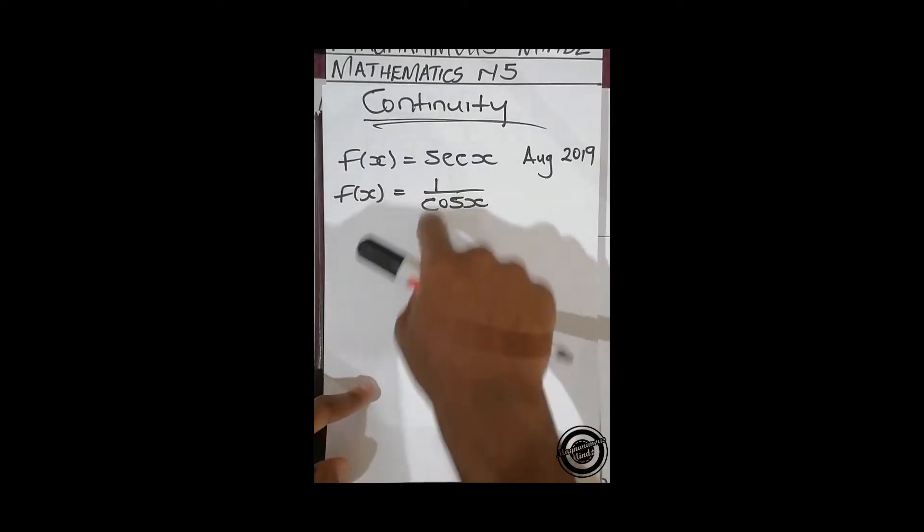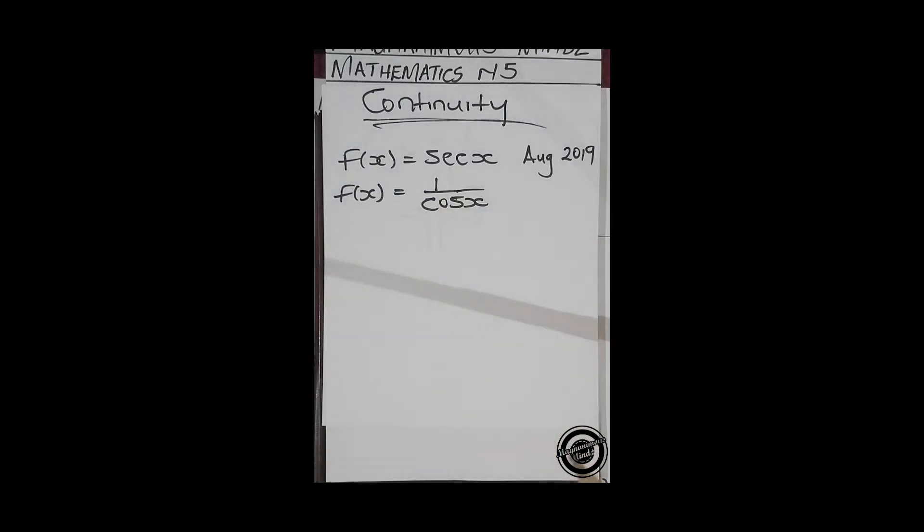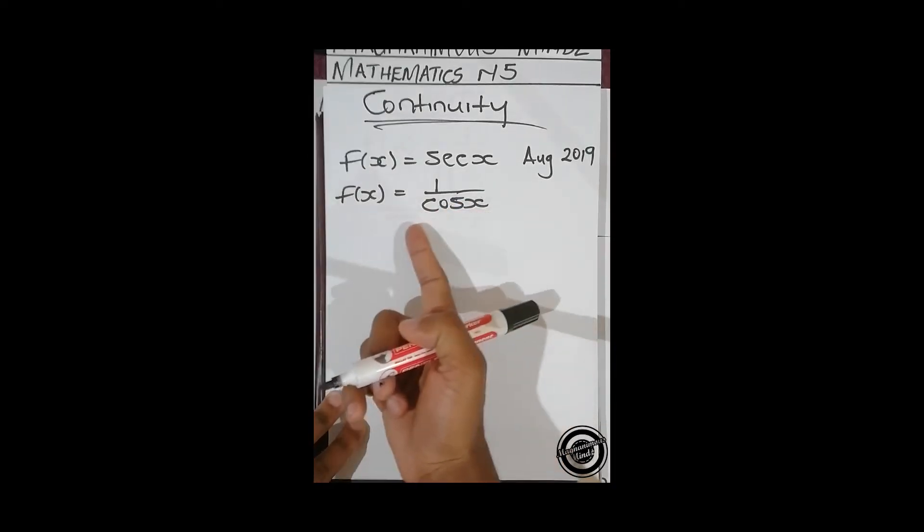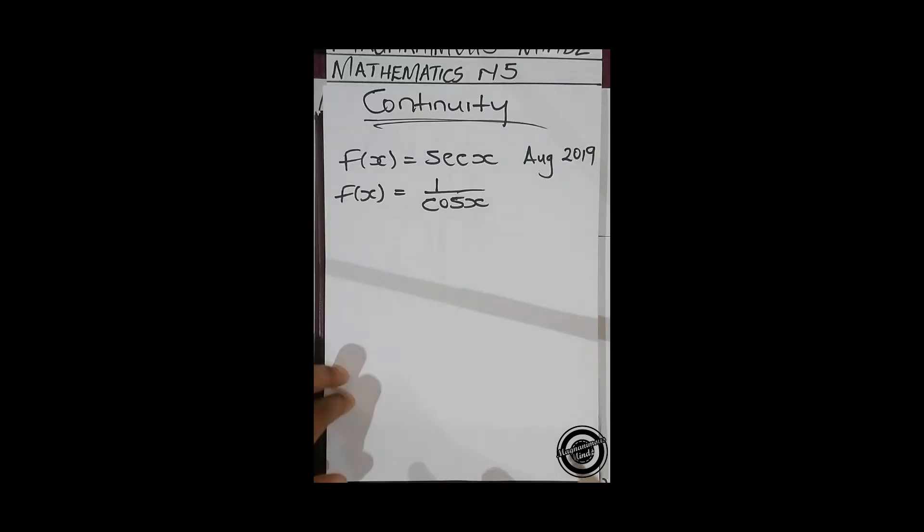So that means where it gives you undefined, where this function is undefined, the whole function, not cos x, the whole function is undefined. That's where you've got discontinuity. So how do you get those points? That means since cos x is not supposed to be zero so that this can be undefined, your points are where cos x is zero.